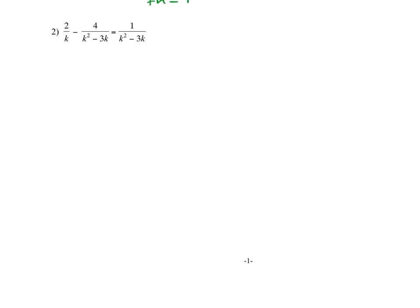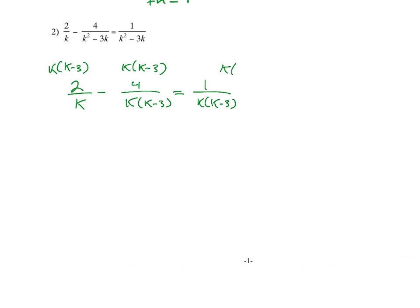So that means my least common multiple is going to be k. For number 2, again, I'm going to find my least common multiple. In this case, I'm going to factor everything. So I have 2 over k minus 4 over k(k minus 3) equals 1 over k(k minus 3). That means my least common multiple is going to be k(k minus 3). So I'm going to multiply everything times k(k minus 3).